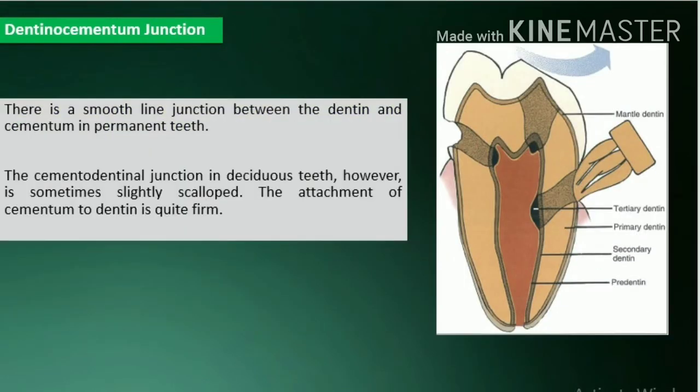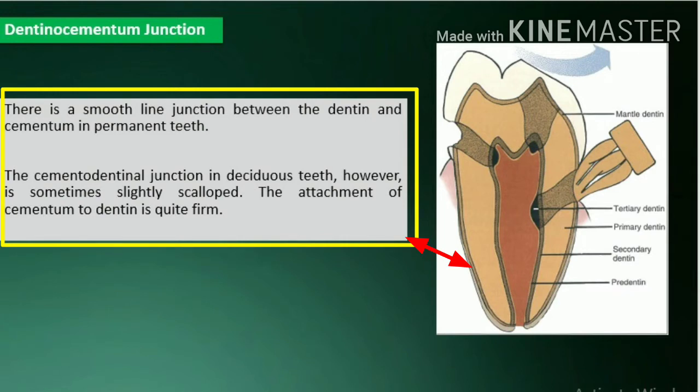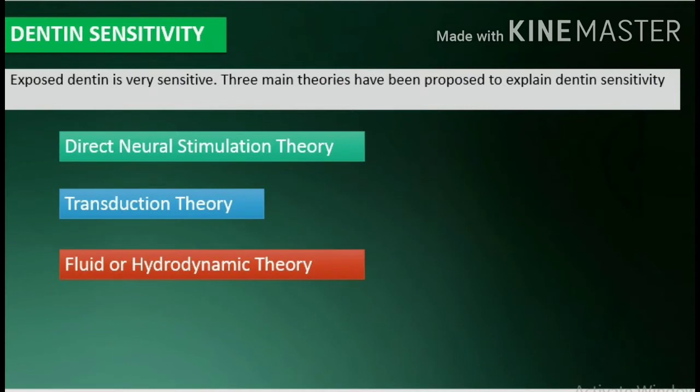Dentinocement junction: there is a smooth line junction between the dentin and cementum in permanent teeth. The cementodentinal junction in deciduous teeth, however, is sometimes slightly scalloped. The attachment of cementum to dentin is quite firm.